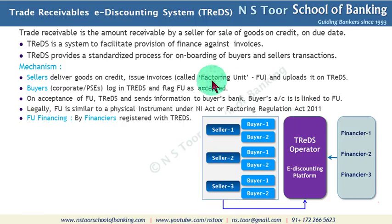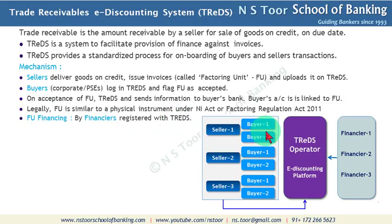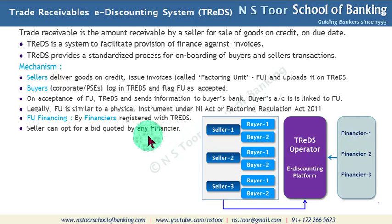Regarding financing of the factoring unit — the financiers who are registered with TReDS will quote their rates, indicating they are ready to provide finance against this factoring unit. Financiers can quote only when they are registered with the TReDS system. Once they give their quote, the seller can opt for any bid given by any financier. The seller has the option to accept any financier's bid.